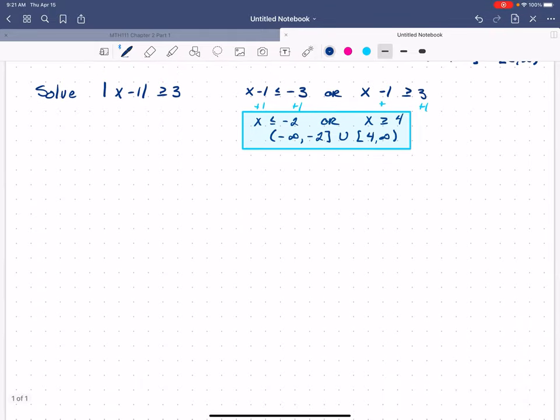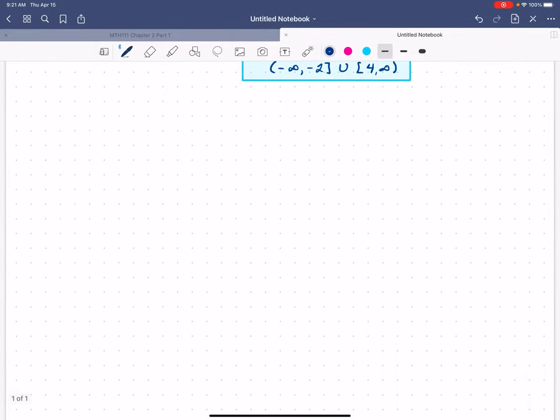All right, let's try one that's a bit more complicated. Let's try to solve 4 minus 3 times the absolute value of 2x plus 1 is greater than or equal to negative 2. Now that negative on the other side of that inequality might be bothersome to you, but we're not done yet, so don't panic. What we're going to do instead is isolate the inequality.